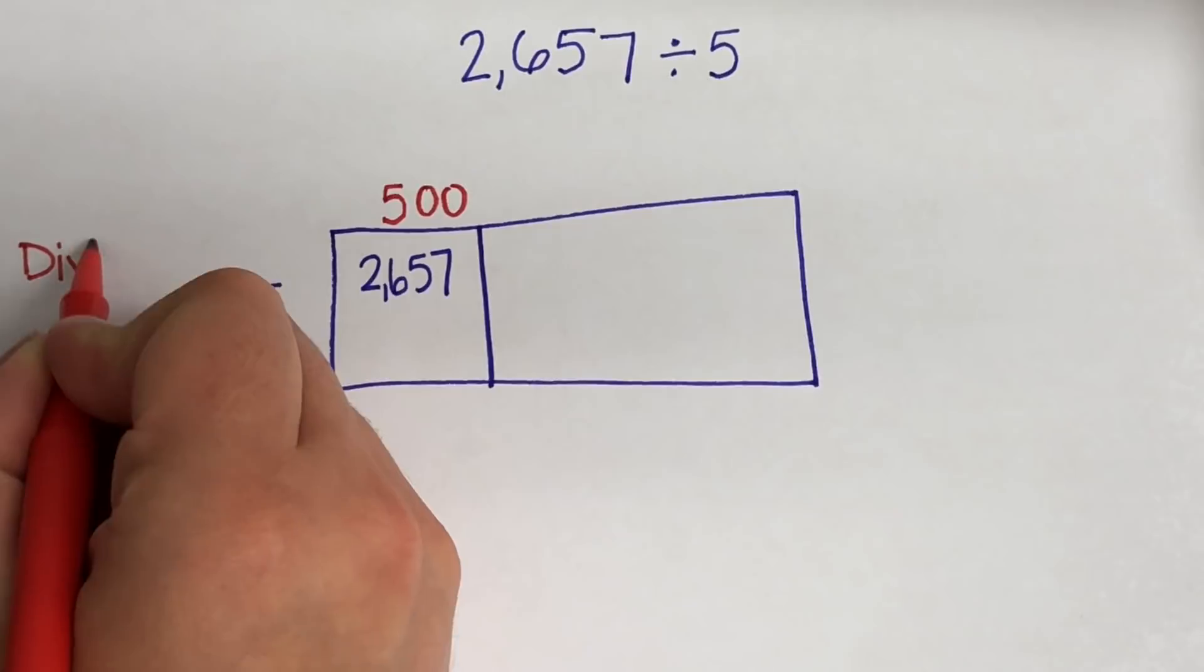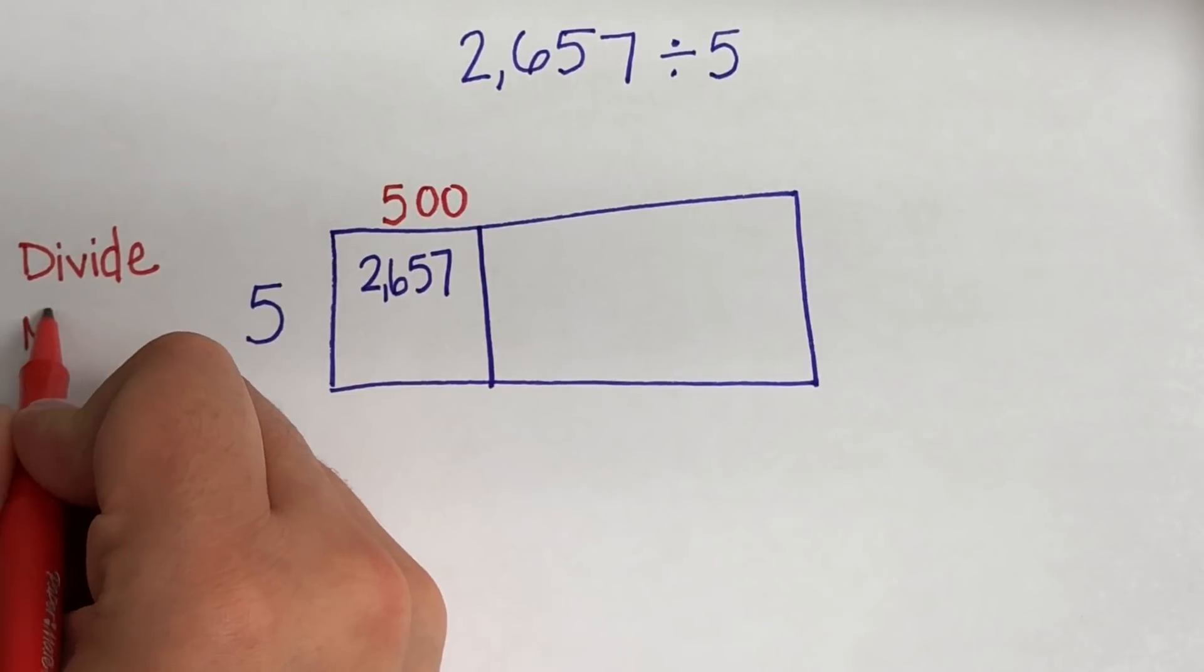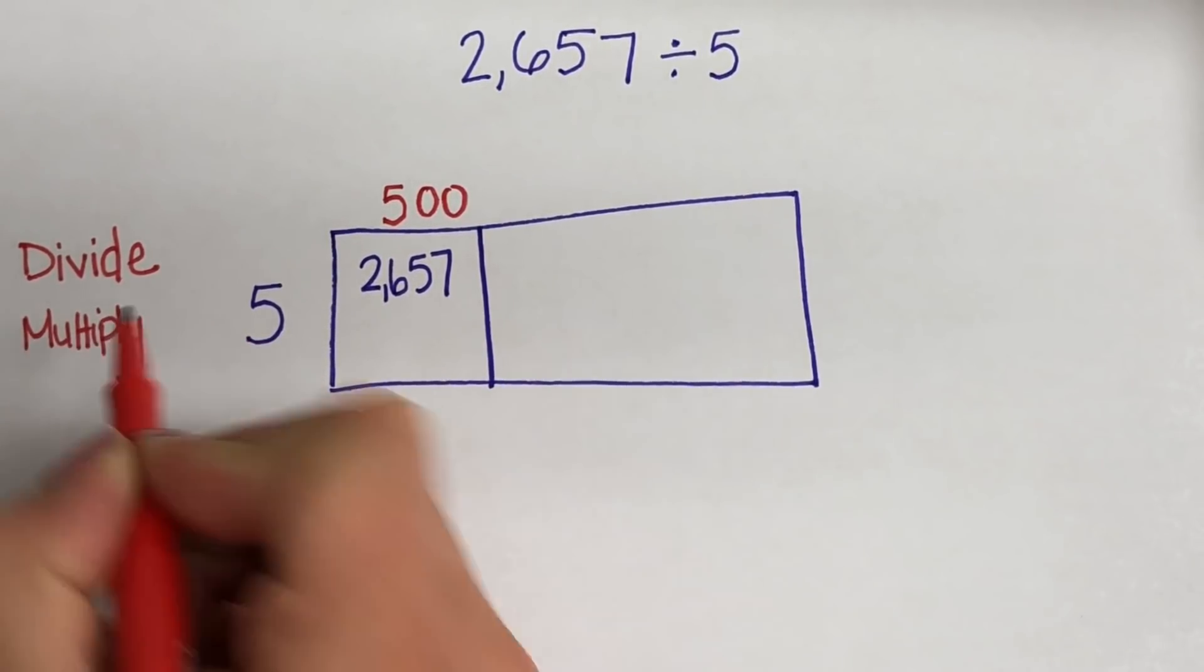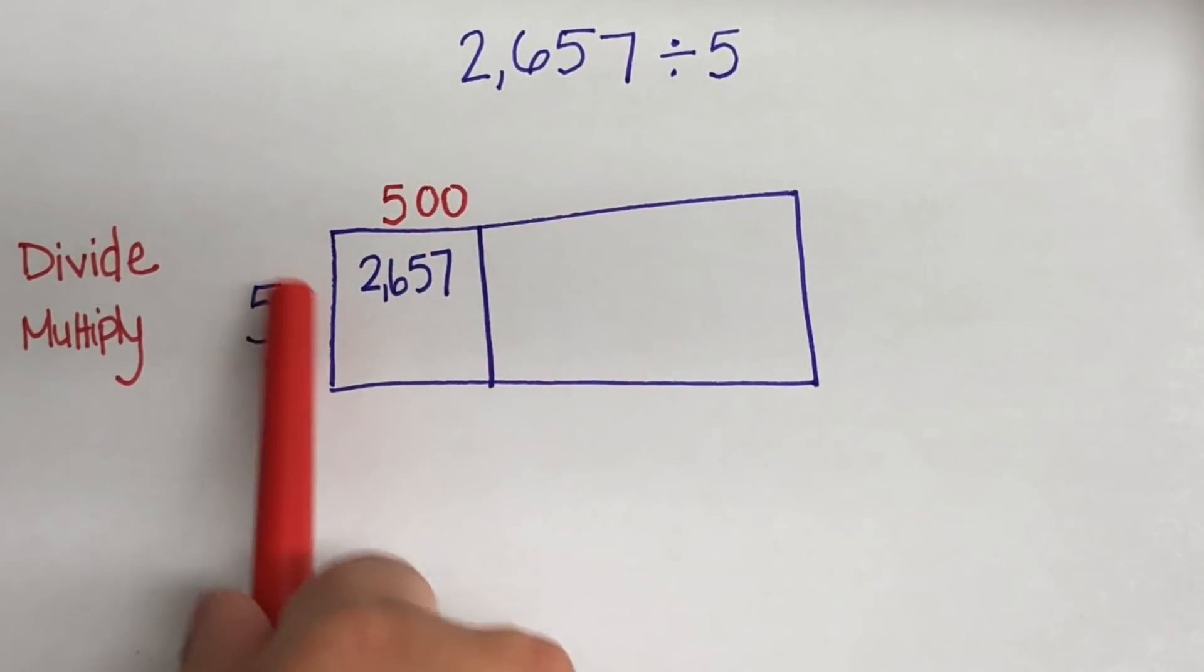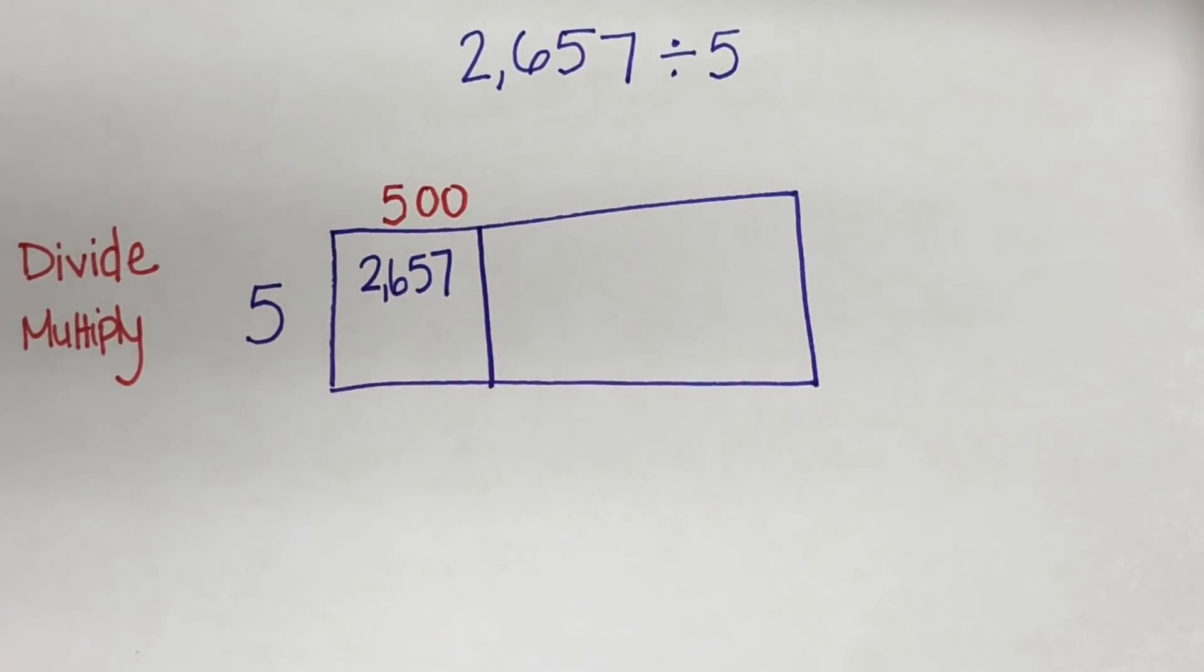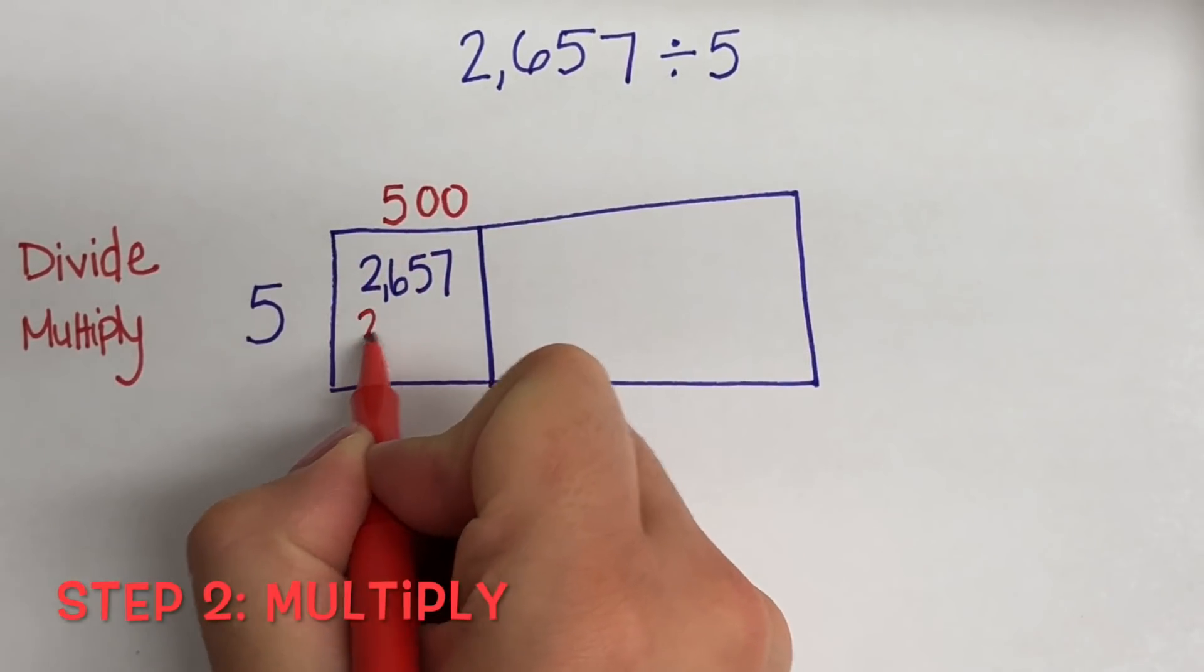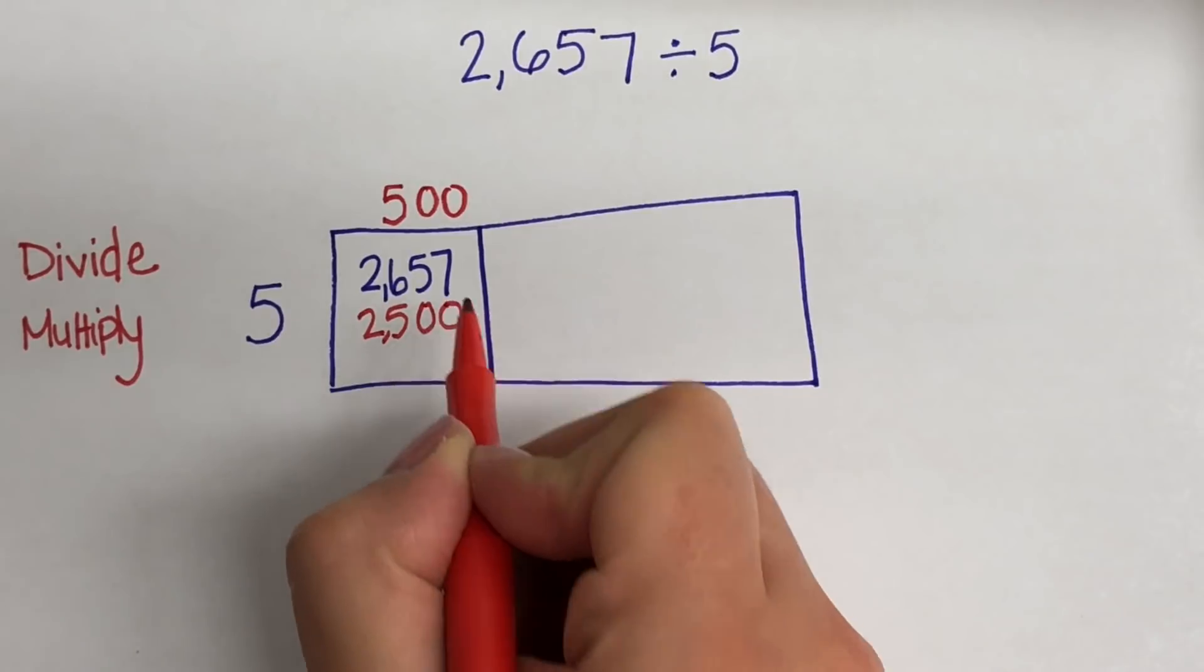So let's start with what we did. We first divided. Then we have to now multiply our partial quotient. So our partial quotient is in the red. That is part of our quotient. We are going to multiply it by our divisor. 500 times 5 equals 2,500 because 5 times 5 is 25 and then we add our zeros. So our second step, multiply.